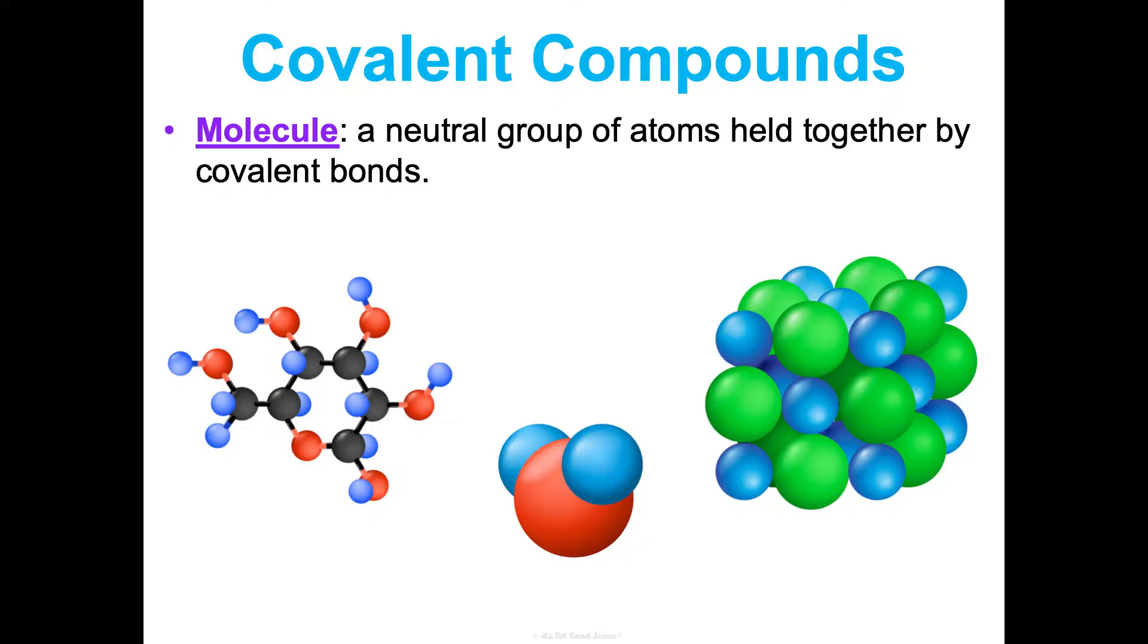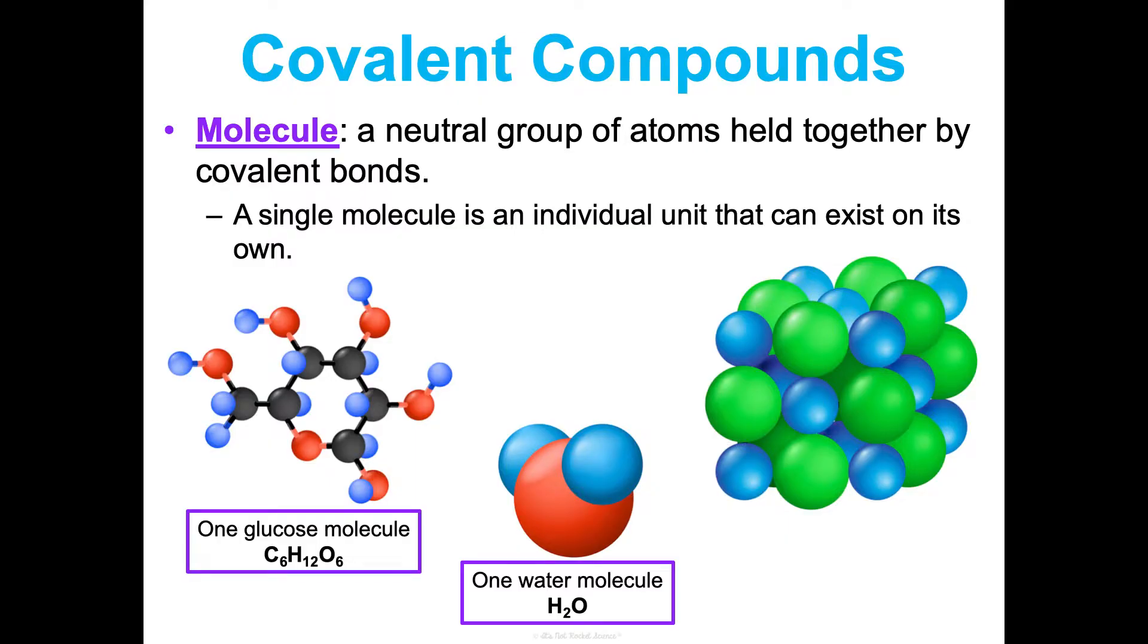A reminder that the term molecule is specific to covalent compounds. It is a neutral group of atoms that are held together by covalent bonds. And a single molecule is an individual unit. It exists on its own. We can look at just one of them at a time. So for example, here's a picture of one glucose molecule, C6H12O6. Here's a picture of one water molecule, H2O. These are both molecules. And this molecular formula is its chemical formula in these covalent compounds.